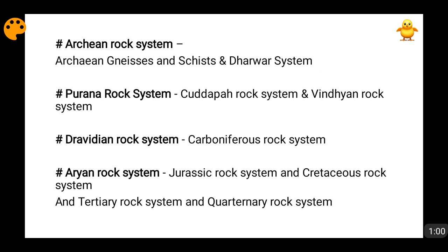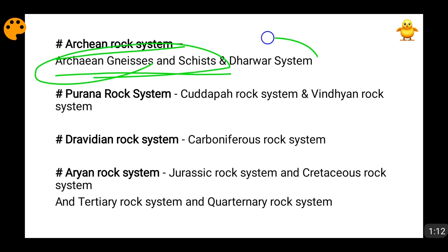If I segregate the rock system of India, the very first which comes in front of us is the Archean rock system friends. This Archean rock system is further divided into Archean gneisses and schists, which are the oldest. After some time comes the Dharwar system. The Dharwar system is also actually very old friends, but it is comparatively newer than the Archean rock system.